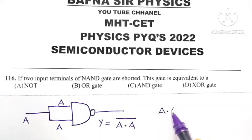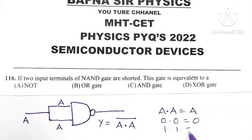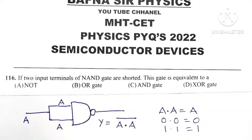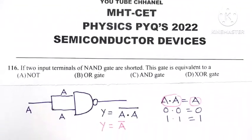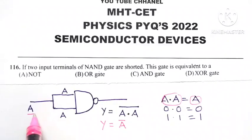But we know what is A dot A? You can verify: zero into zero equal to zero, or one into one equal to one. Therefore you can make a logical conclusion that A dot A is equal to A. So Y becomes equal to complement of A. So we are having input A and output is A bar.